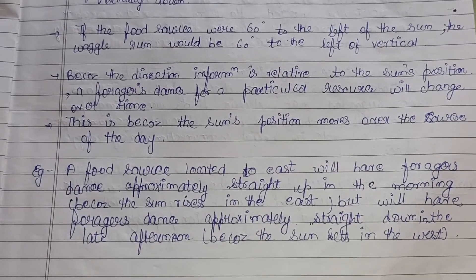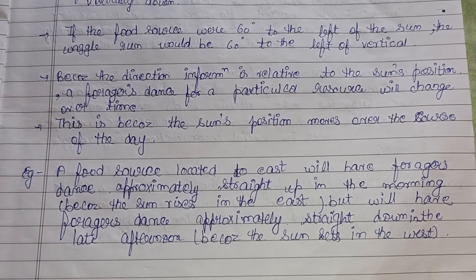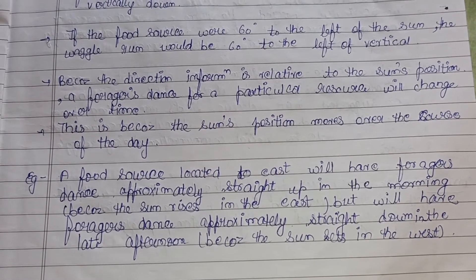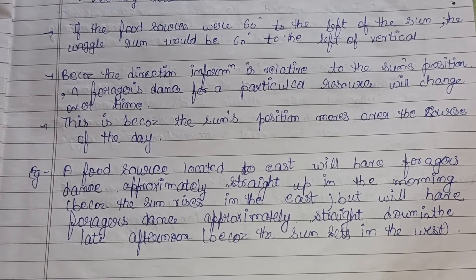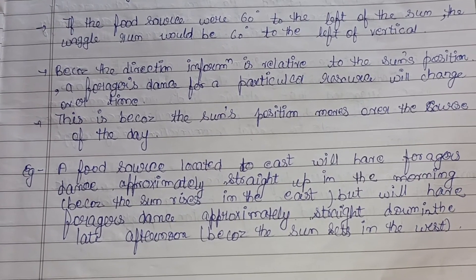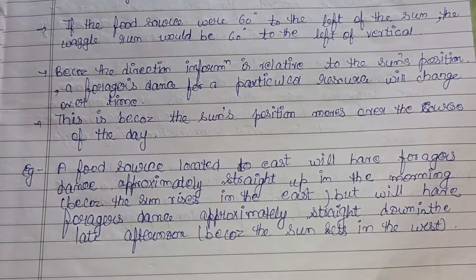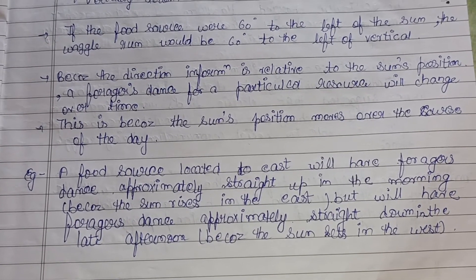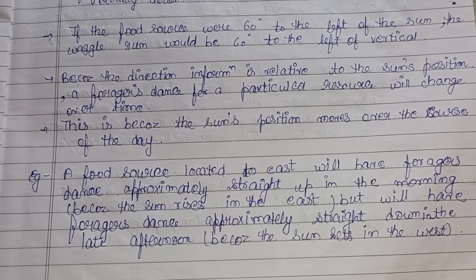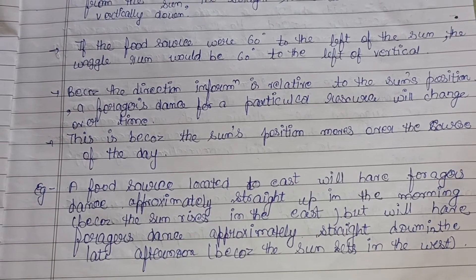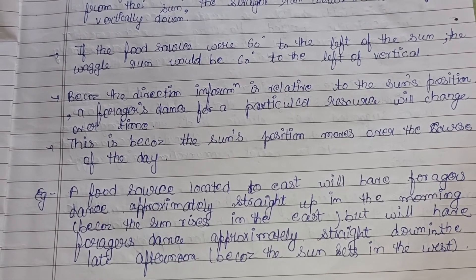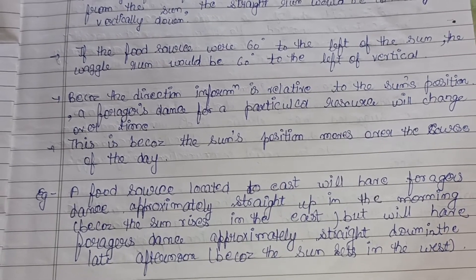For example, a food source located to the east will have the forager dancing approximately straight up in the morning, since the sun rises in the east. In the late afternoon, the same forager will dance approximately straight down, because the sun sets in the west. The worker bee's dance position is thus in continuous relation to the sun's position.